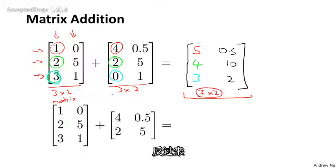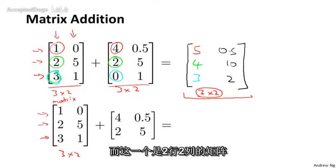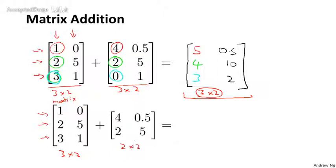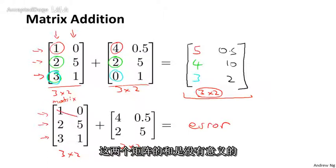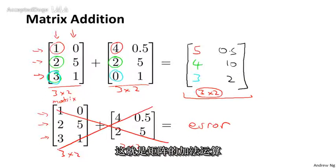Whereas in contrast, if you take these two matrices, this one is a 3 by 2 matrix, this here is a 2 by 2 matrix. And because these two matrices are not of the same dimension, this is an error. So you cannot add these two matrices and their sum is not well defined.